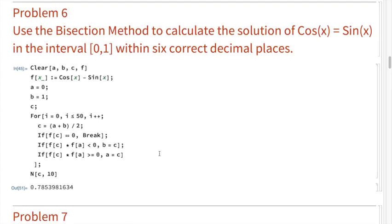Problem 6: use the bisection method to calculate the solution of cos(x) = sin(x) in the interval 0 to 1 within six correct decimal places. Same thought process as before — nothing new here. We define f(x) = cos(x) - sin(x), set a = 0 and b = 1 for the starting interval, define the third variable c, run the same code, and find that the root is about 0.7853.